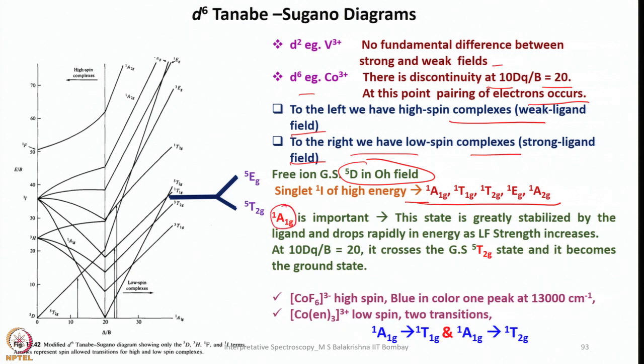The free ion ground state is 5D. In the octahedral field, singlet 1A of high energy consists of these levels. Here, 1A1g is very important. This state is greatly stabilized by the ligands and drops rapidly in energy as ligand field strength increases. You can see 1A1g drops here as we move from left to right because they become low spin complex. It crosses the ground state 5T2g and becomes the ground state here.